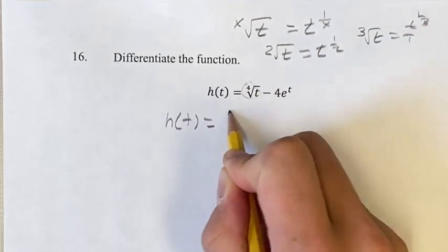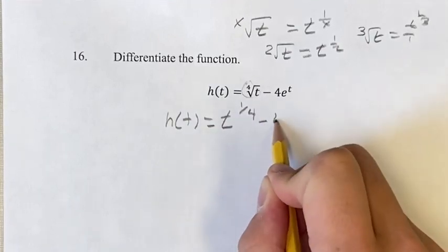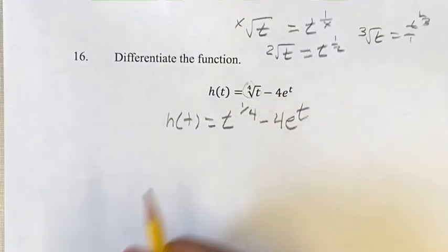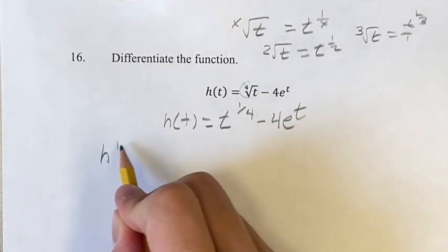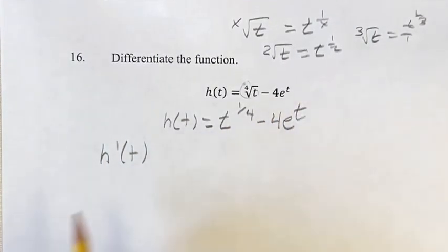So h of t equals t to the 1 fourth minus 4e to the t. Now, this is a power function, and we know how to find the derivative of that. So h prime of t, like I said, we're going to go step by step.